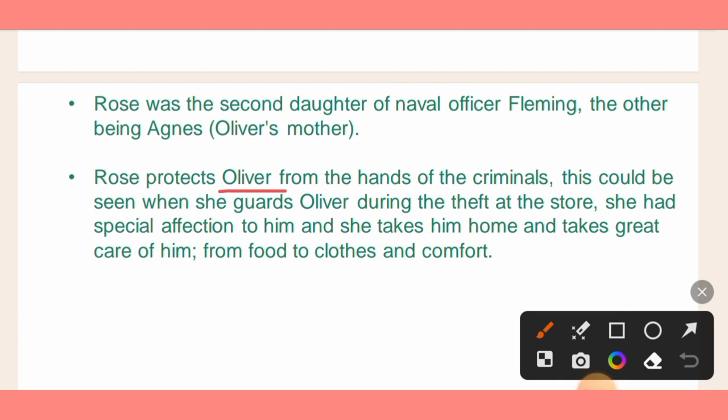Rose protects Oliver from being accused as a criminal. This can be seen when she guards Oliver during the theft at a store. When Oliver is accused, she does not want him to be condemned. She identifies that this boy could not have done such a thing, and she goes with him, treating him just like a family member, showing her compassionate and protective nature.